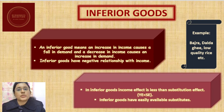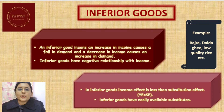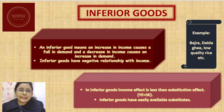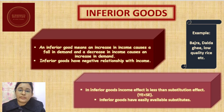The substitution effect is stronger compared to the income effect in case of inferior goods. Popular examples of inferior goods are Bajra, Dalda Ghee, or low-quality rice. These are considered inferior goods.